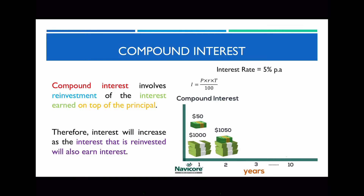With compound interest, since 'compound' means to add on, you're going to be adding this $50 onto your principal. So your principal for the second year is no longer $1,000 — it's now $1,050. This is the major difference between simple and compound interest: with simple interest the principal always remains the same. With the new principal of $1,050, the interest earned in the second year is $52.50.